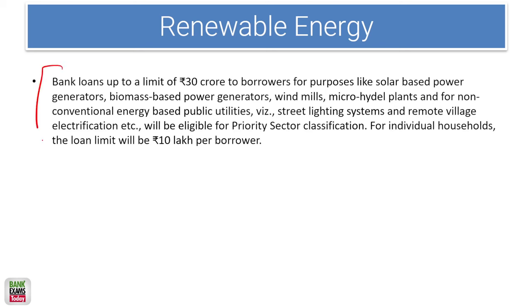Renewable energy: bank loans up to 30 crores for solar-based power generators, biomass-based power generators, windmills, hydro plants, and non-conventional energy-based public utilities like street lighting systems and remote village electrification are priority sector loans. For individual borrowers, the limit is 10 lakh rupees per borrower.